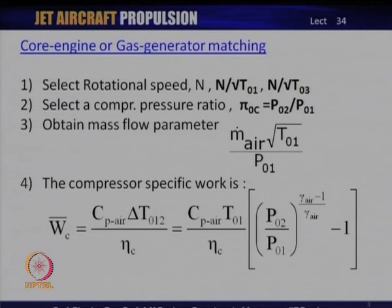The core engine is quite often also referred to as the gas generator, simply because it produces the hot gas which runs the engine. The core engine is composed of the HP compressor and the HP turbine and somewhere between them there is a combustion chamber. The matching of the rotating components of the compressor and turbine is the more important issue here because there are a number of things that need to be taken care of.